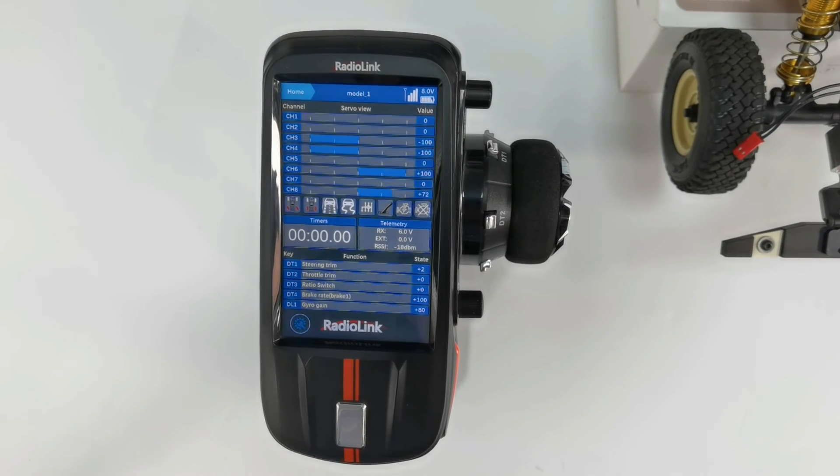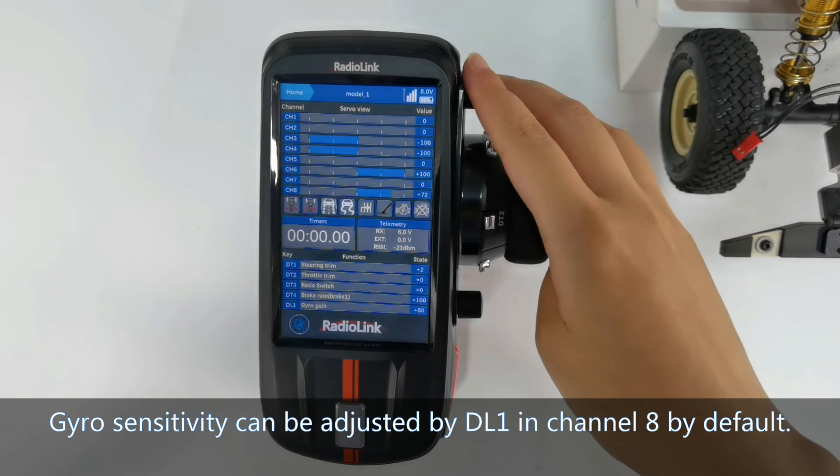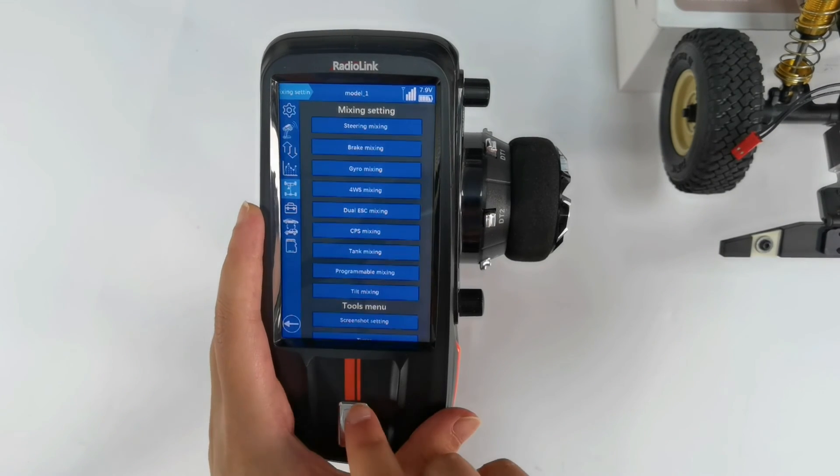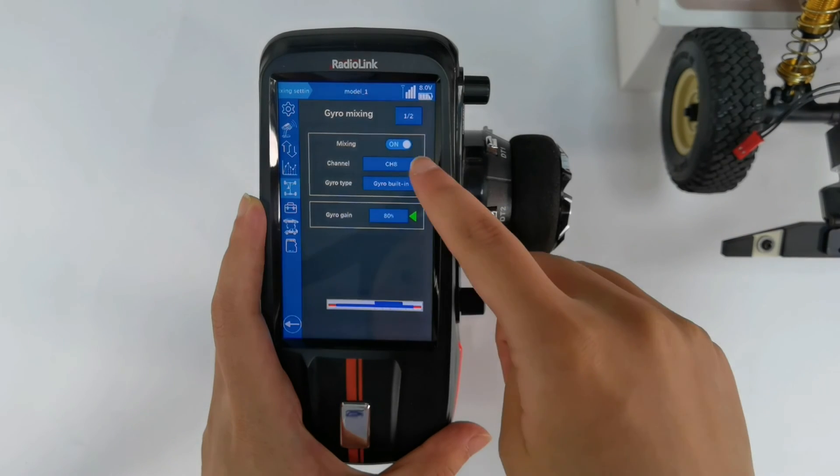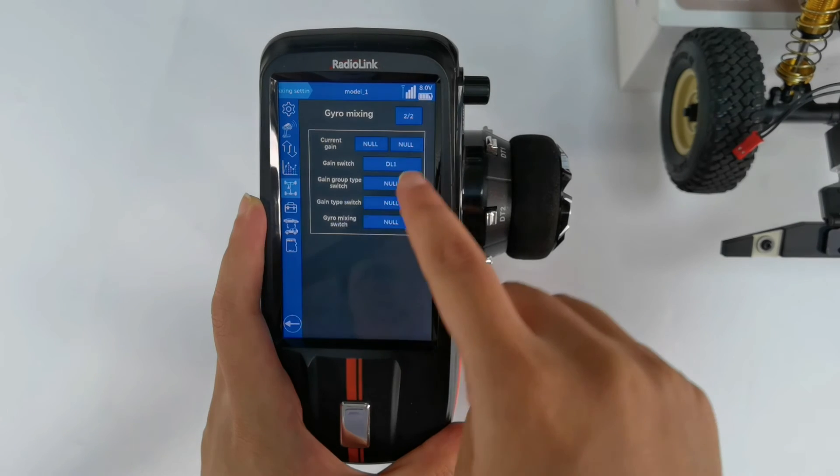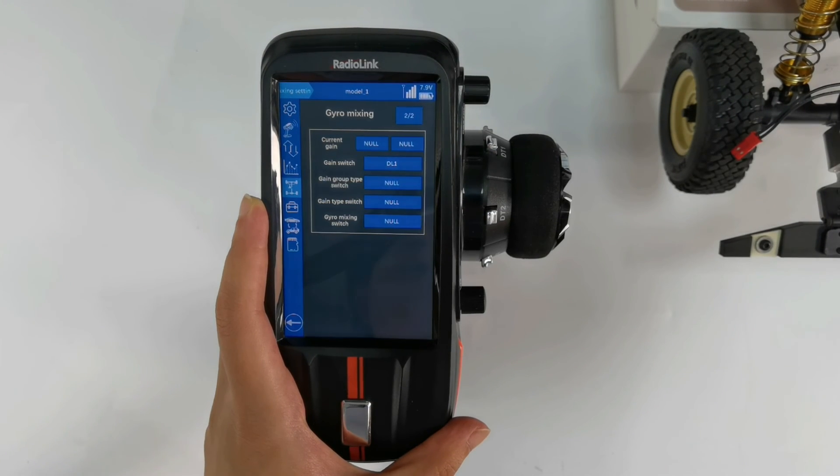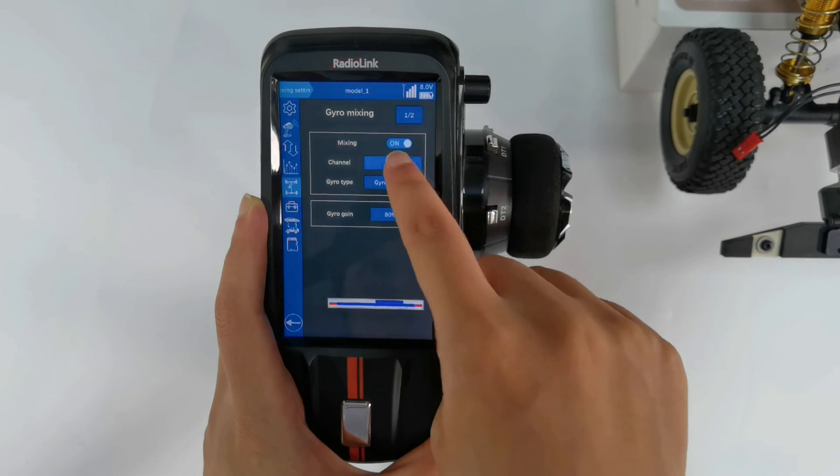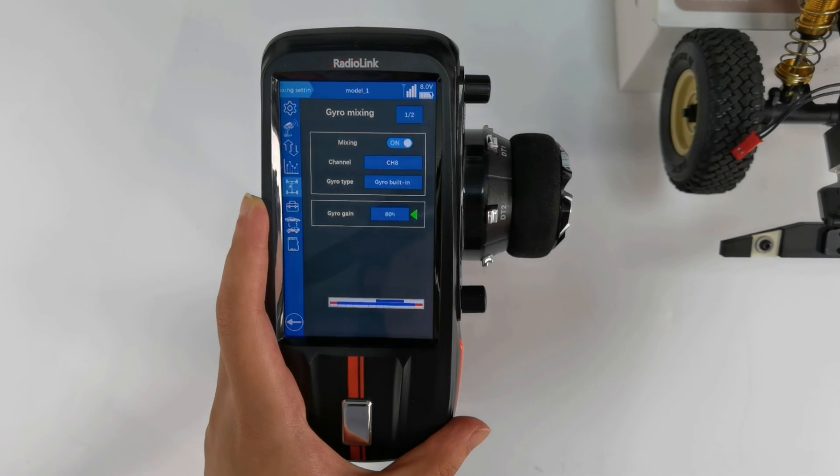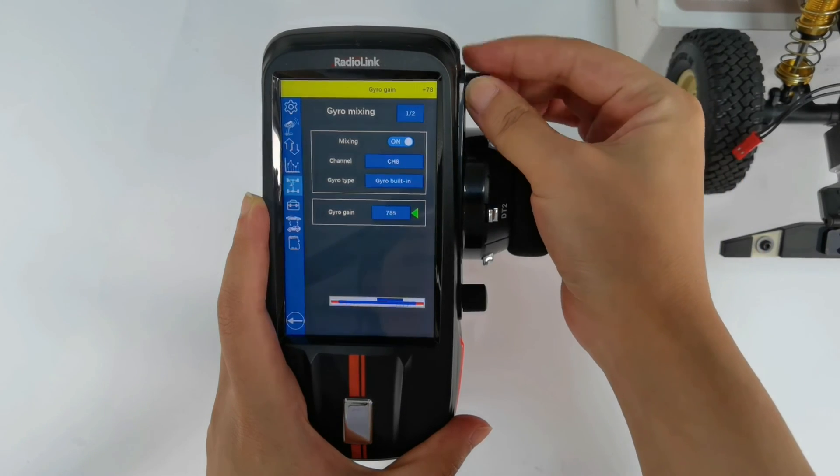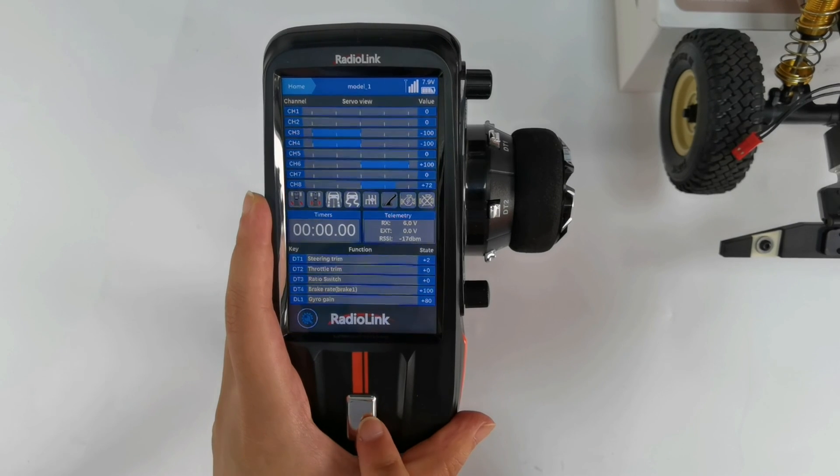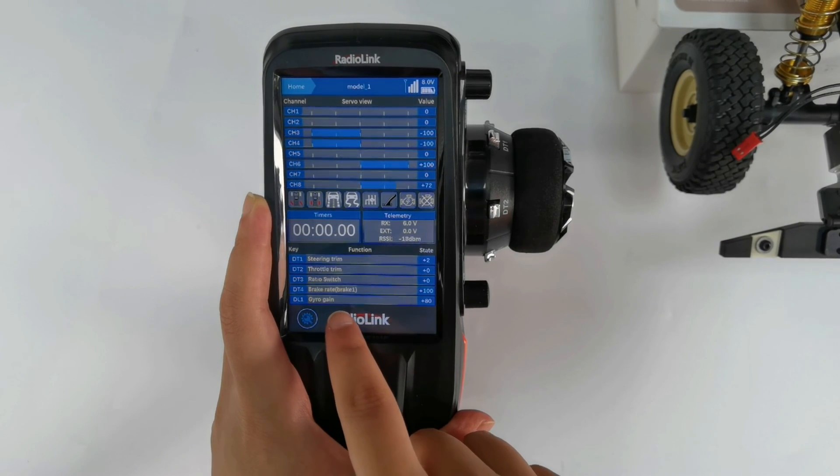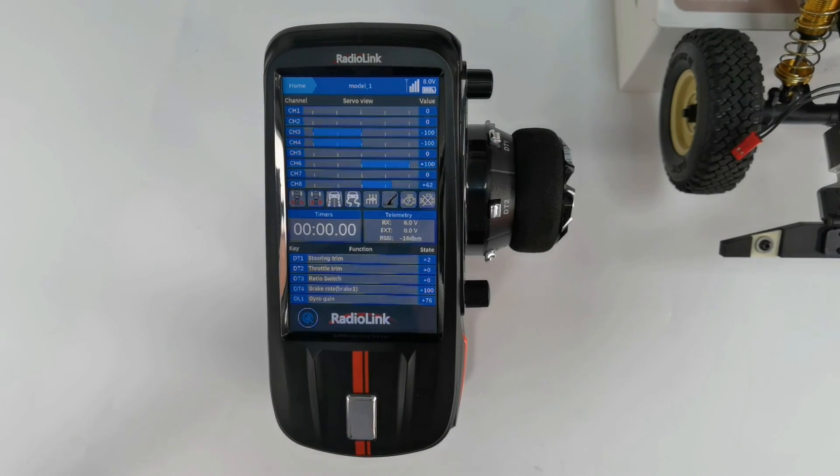When using R8FG with RC8X, gyro sensitivity can be adjusted by DL1 in channel 8 by default in the mix menu. Gyro mixing. Mixing is turned on. The gain switch is DL1. You can also assign other switches or other channels to adjust the gyro sensitivity. Turn DL1 to adjust it, or you can press the plus or minus button here to adjust the sensitivity. The gyro sensitivity can also be adjusted and viewed in the home page here. So that's all about the binding, working modes, and gyro function of R8FG variant 2.1.